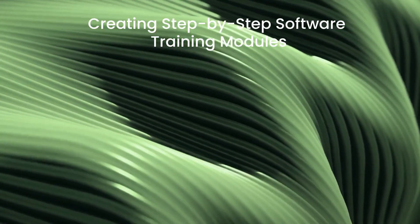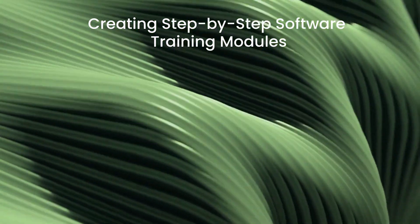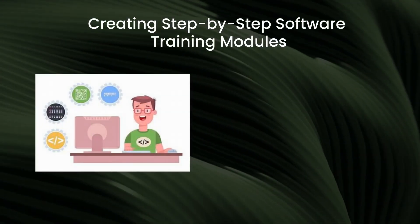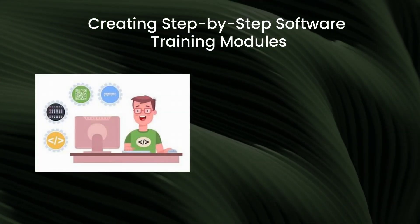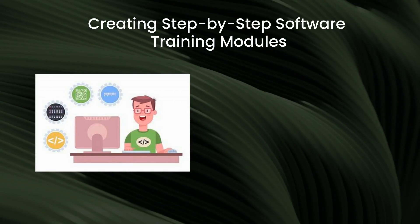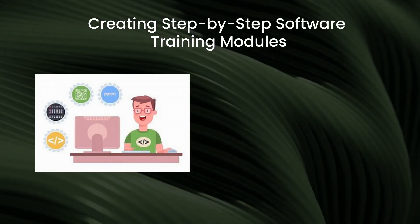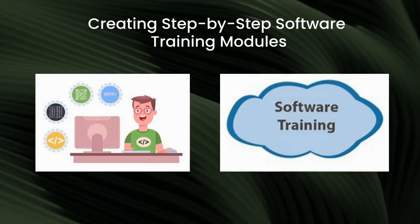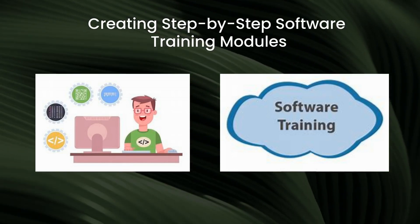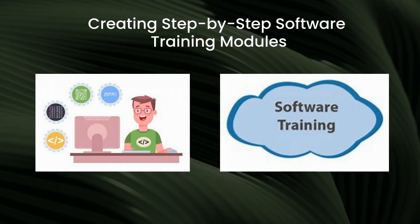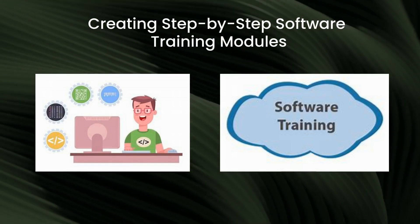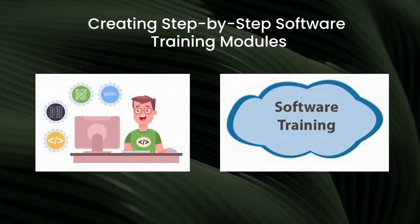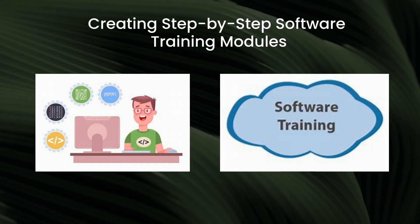Creating step-by-step software training modules. One of the key strengths of Articulate Storyline is its ability to transform complex software procedures into easy-to-follow step-by-step training modules. You can break down intricate processes, guiding employees through each phase, and fostering a better understanding of the software's functionalities.